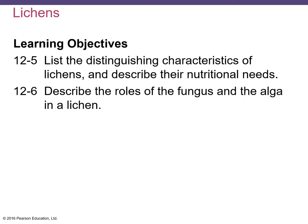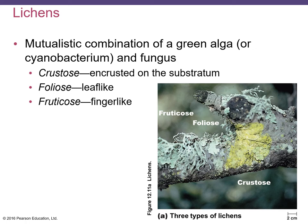Lichen is a combination of a green algae or a cyanobacterium and a fungus. Lichens are placed in the kingdom of fungi and are classified according to the fungal partner, most often as an ascomycete. The two organisms exist in a mutualistic relationship in which each partner benefits.